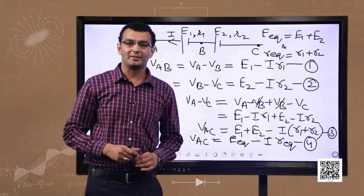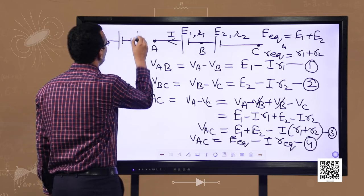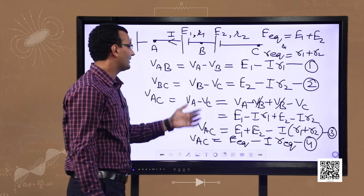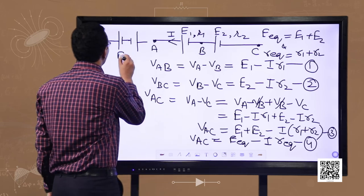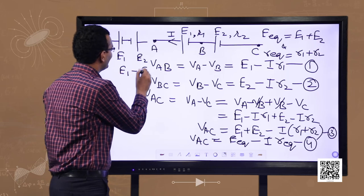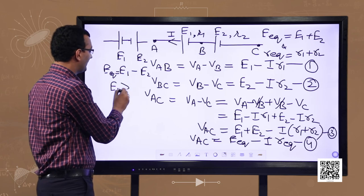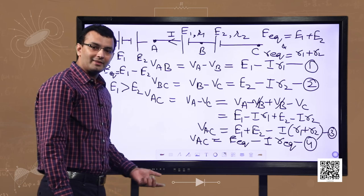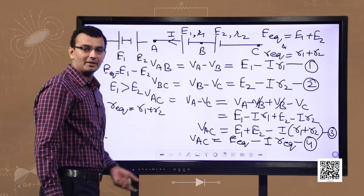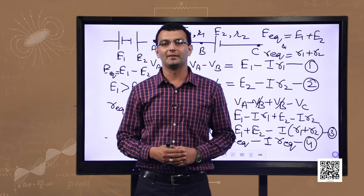What if the same poles are connected together? If the negative terminals of two cells are connected together, the net EMF is given by E1 minus E2, where we have assumed that E1 is greater than E2. The equivalent resistance still remains the same, that is R_equivalent equals R1 plus R2. The rule for series combination can clearly be extended to any number of cells. Next, consider a parallel combination of cells.